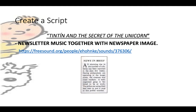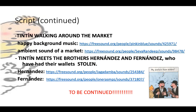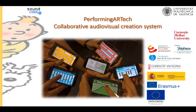Here we have a simple script that we've put together. We have a sound file and the news-in-brief story for the first frame. Then 1010 walking around the market with some happy background music and ambient sounds for the market. Then 1010 meets the brothers Hernandez and Fernandez who have had their wallets stolen, and we have sounds for them, and so on. For this workshop, we will use a very basic configuration of SoundCool to play sounds and display images.